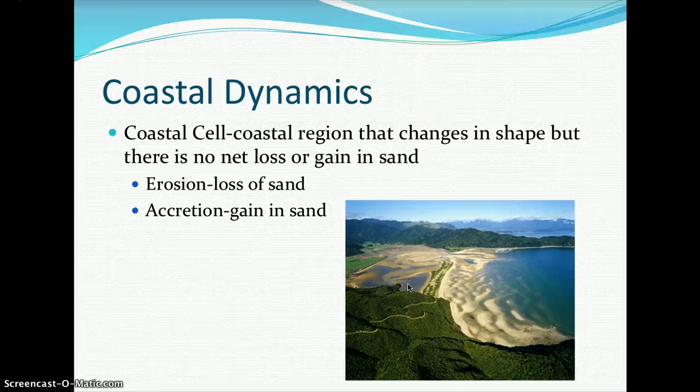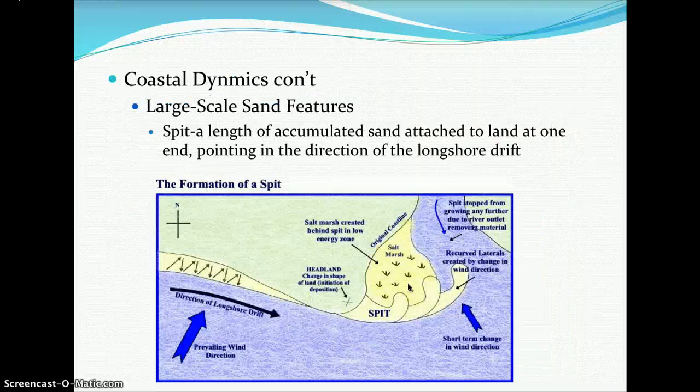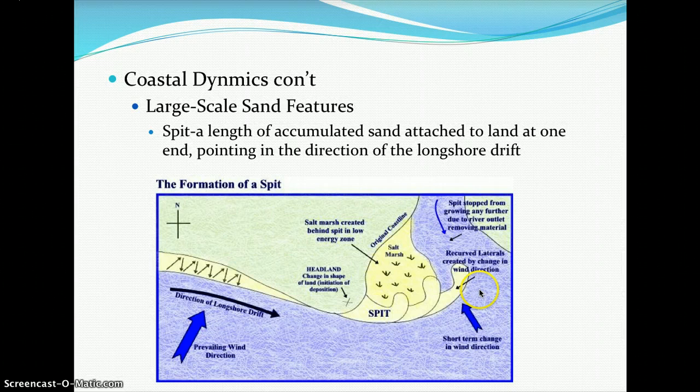Sometimes large-scale features occur due to longshore drift and the longshore current. One of these features is a spit — a length of accumulated sand attached to land at one end that points in the direction of the longshore drift. Here you can see a spit, a salt marsh, and the original coastline, with the longshore drift coming in and forming this accumulation of sand extending off the land.